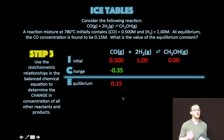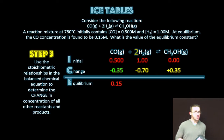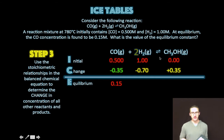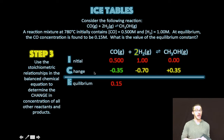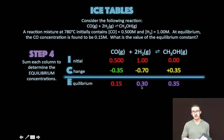Step two: since we know initial and equilibrium concentrations, let's calculate the change in concentration that occurs. We must have had a decrease of 0.35 molar to get from 0.5 to 0.15. Step three: use the stoichiometric relationships in the balanced chemical equation to determine the change in concentration for all the other reactants and products. If CO decreased by 0.35 molar, then hydrogen decreased by 0.70 molar, and the concentration of methanol increased by 0.35 molar.